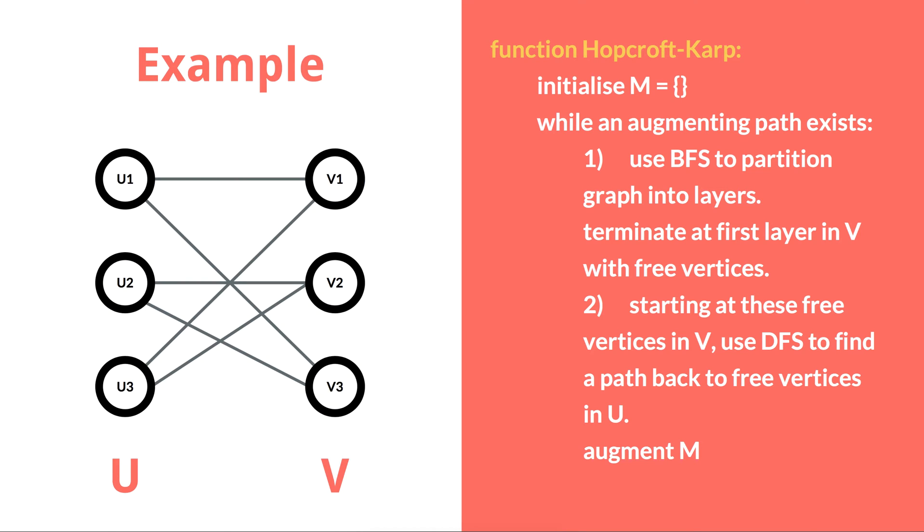The graph starts with all the nodes in each side of the graph, U and V, having no pairings. On the first iteration of the algorithm, the breadth-first search starts from all of the three nodes in U.